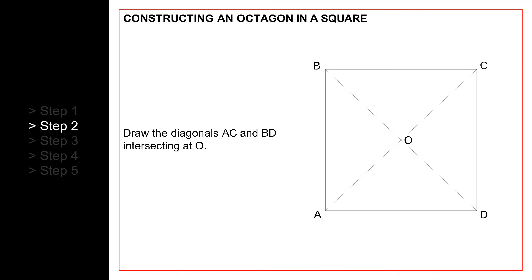Then, we draw the diagonals AC and BD to find the middle of the square. We label it O.